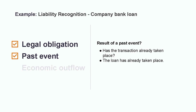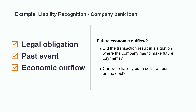Number two, did this come about as a result of a past event? This is really just confirming that the transaction has already taken place. In this case, the criteria is met because the loan has already been executed and the money has changed hands. Number three, and possibly the most important criteria, is whether there is expected to be a future economic outflow that can be measured reliably. What this really means is, did the transaction result in a situation where the company will be required to make future payments, and can we accurately put a dollar amount to the debt? Again, in this case the answer is clearly yes. We know the specific dollar amount that needs to be paid back — in this case it's the $100,000 principal plus 10% interest per year.